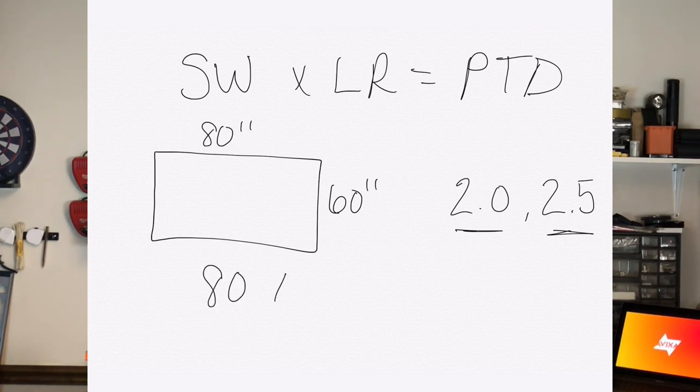For the first example, we're going to work out 80 inches wide times 2.0, which gives us 160 inches, so that means I can place the projector 160 inches away from the screen.